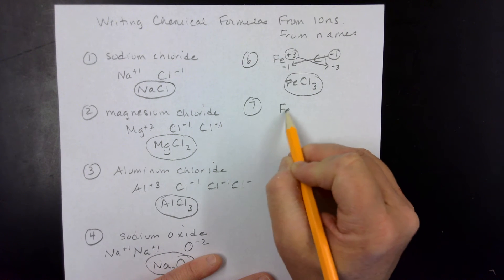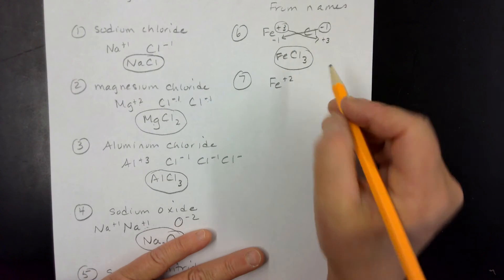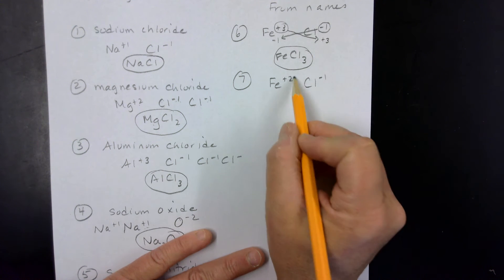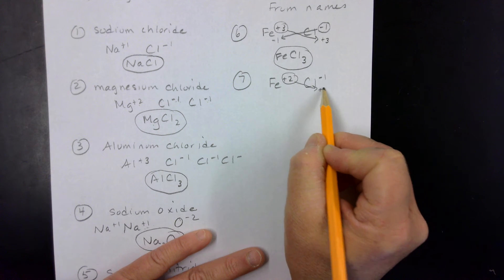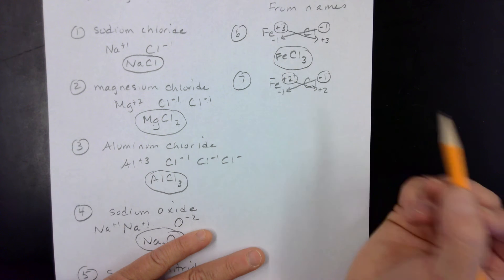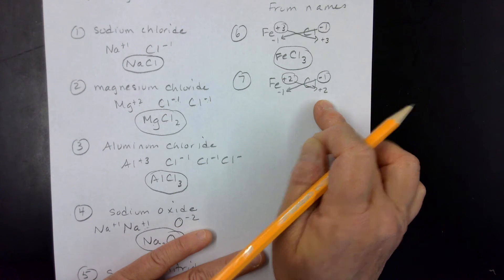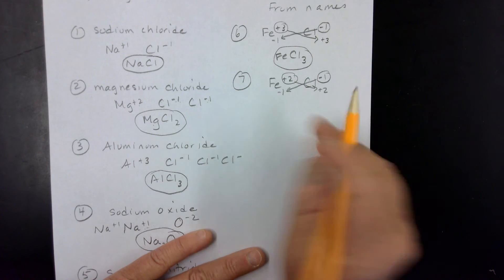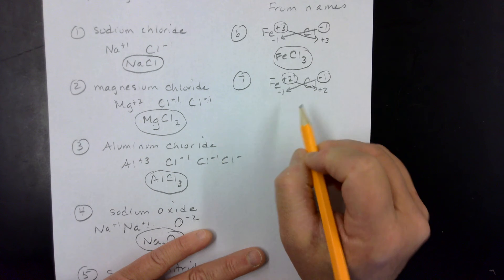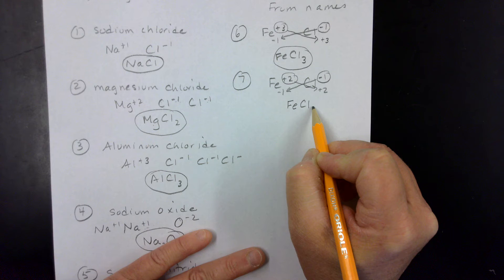Sometimes iron can be a plus two charge. Let's see what happens with iron plus two and chloride minus one. Using the crisscross drop and swap, we bring down the numbers, drop all charges, and any subscript of one disappears. This becomes FeCl₂.